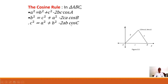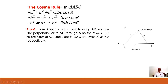For proving the cosine rule, first of all we consider the oblique triangle. We take the vertex A at the origin with the x-axis along AB, and the line perpendicular to AB through A as the y-axis. The coordinates of A are (0, 0), the coordinates of B are (c, 0), and the coordinates of C are (b·cosA, b·sinA), respectively.